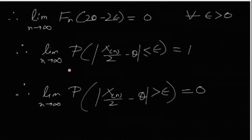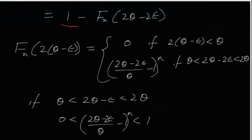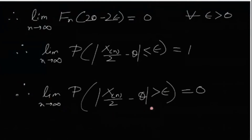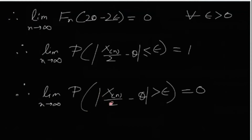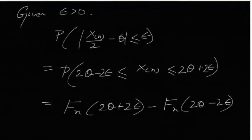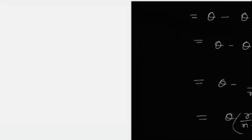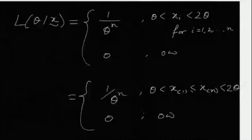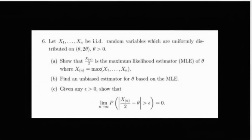Therefore, lim_{n→∞} P(|X_(n)/2 − θ| > ε) = 1 − 1 = 0, as required. The solution only needed the definition of X_(n), how to find its CDF, and standard limit arguments. This is one of the easier problems in the paper. There you have it — the complete solution. See you next time.